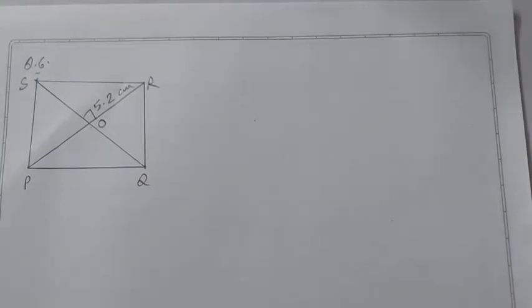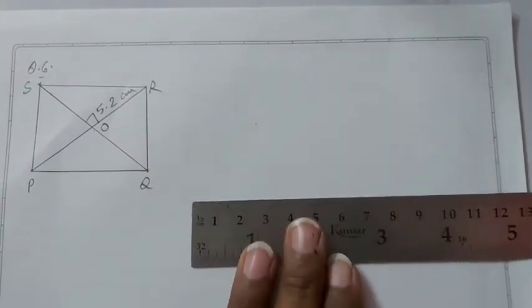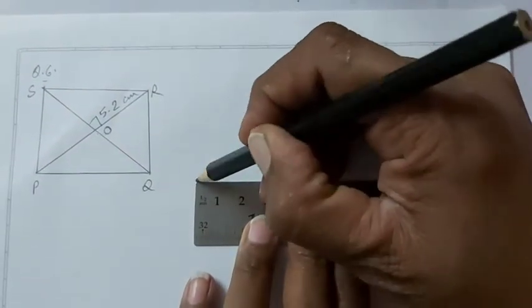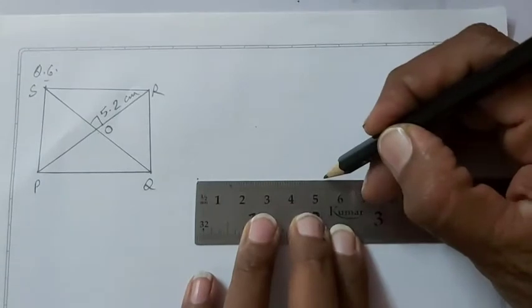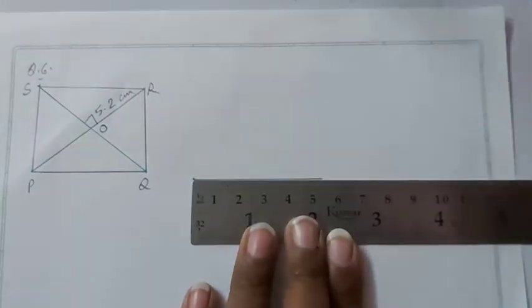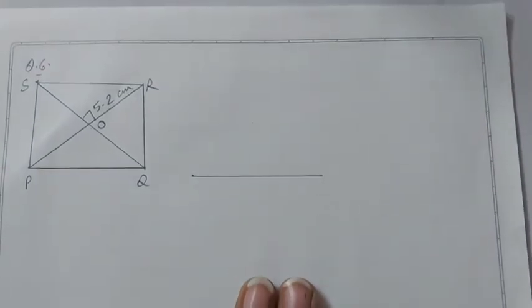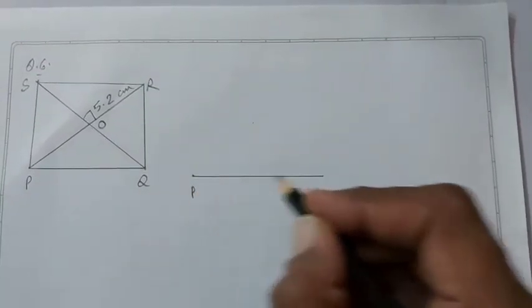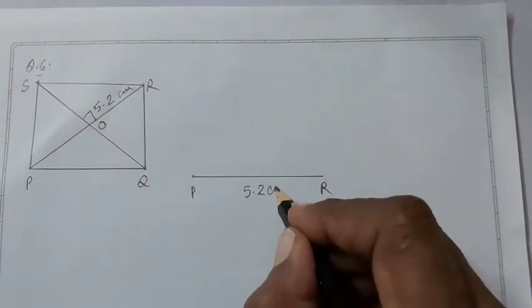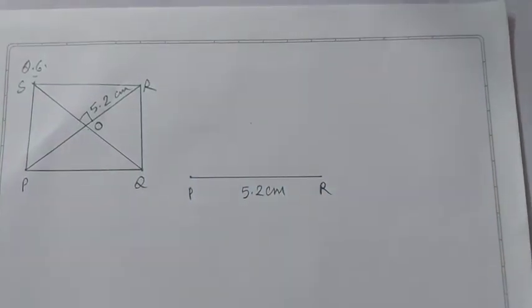We will start with the line segment PR which is a diagonal equal to 5.2 cm. Label it and bisect it using compasses.